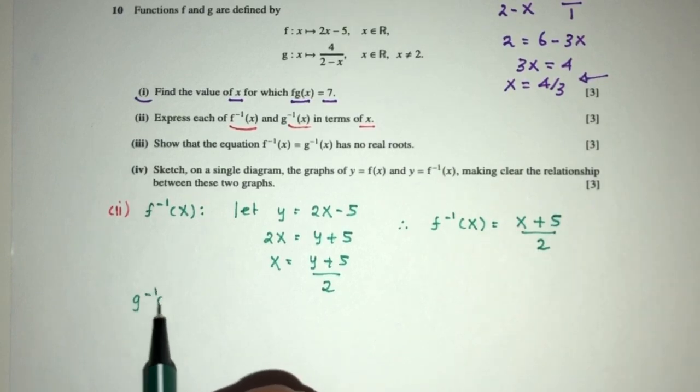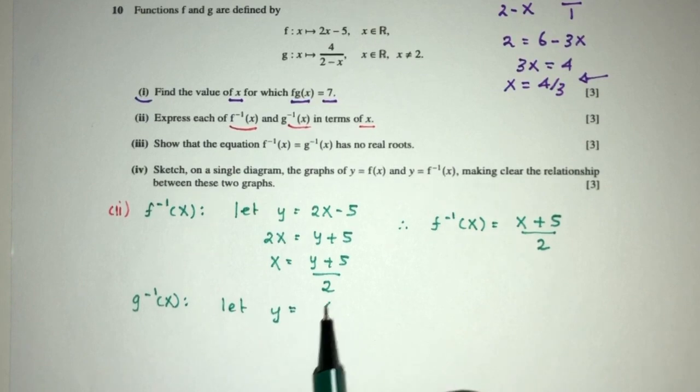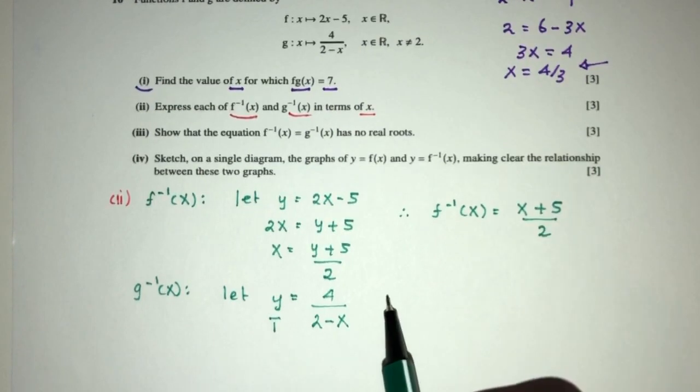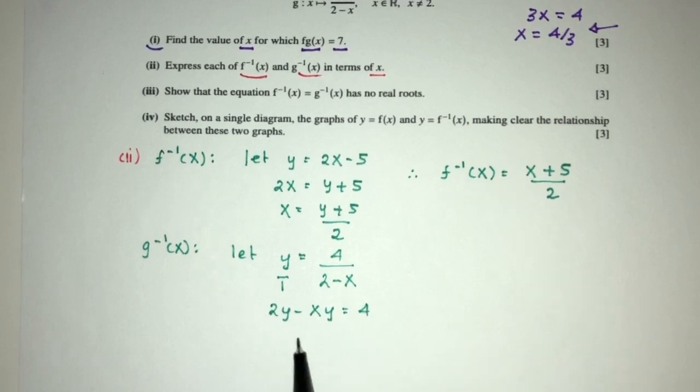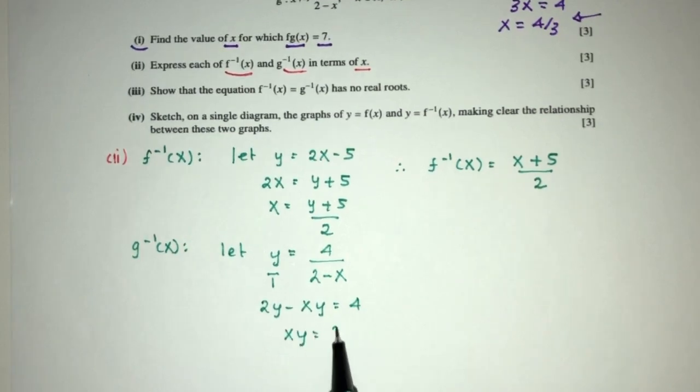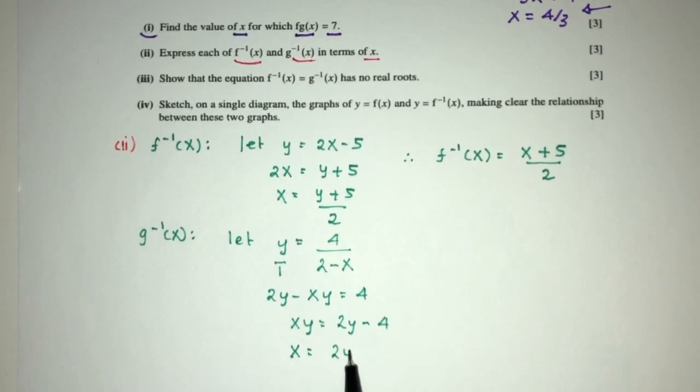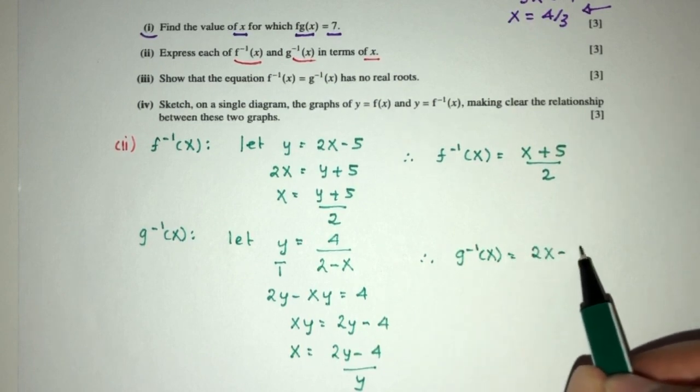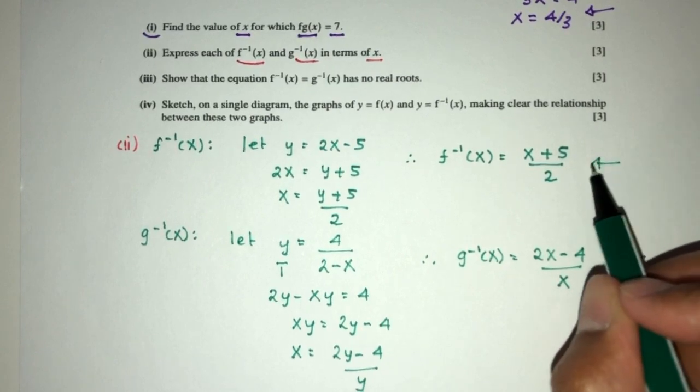Now for g inverse of x, let y = g(x), which is 4/(2-x). Cross multiply and you will have 2y - xy = 4. Now xy = 2y - 4, so x = (2y-4)/y. Finally, g inverse of x is simply (2x-4)/x. These are the two things we're finding in terms of x.